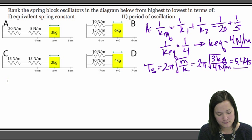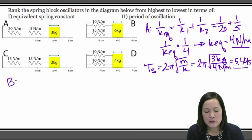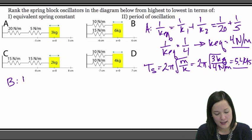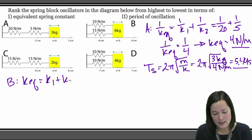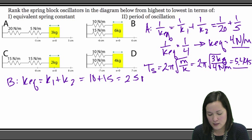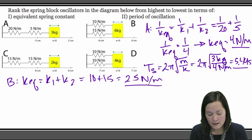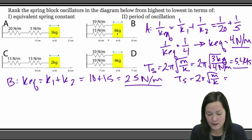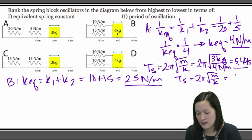For spring system B, we have 2 springs in parallel, which is easier to calculate. k_eq for parallel springs equals k1 plus k2, which in this case is 10 plus 15, or 25 newtons per meter. Using Ts equals 2π times the square root of m over k, substituting in 6 kilograms over 25 newtons per meter, gives a period of 3.08 seconds.